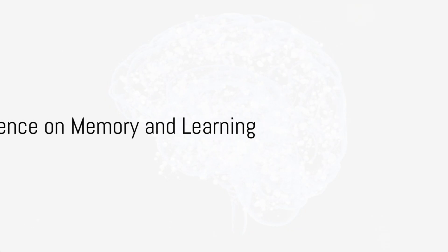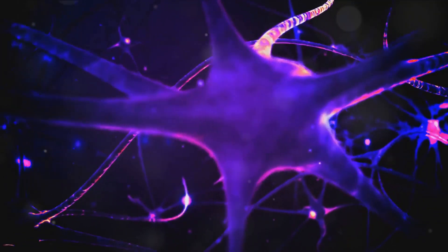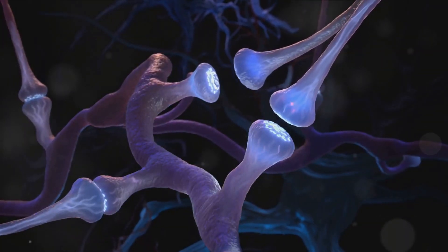Anandamide is a master regulator in our brain, particularly when it comes to memory and learning. This bliss molecule controls neurotransmitter release, fostering short-term synaptic plasticity, a process vital for memory formation and learning.